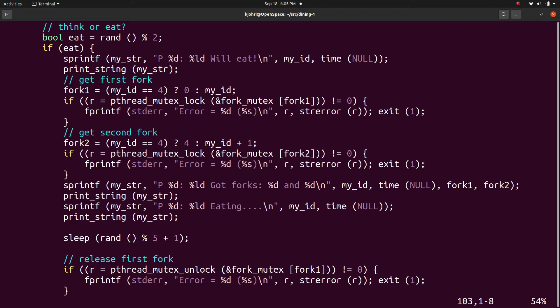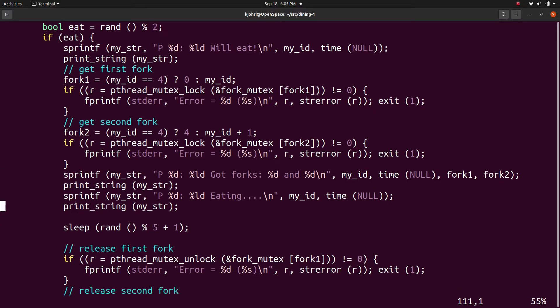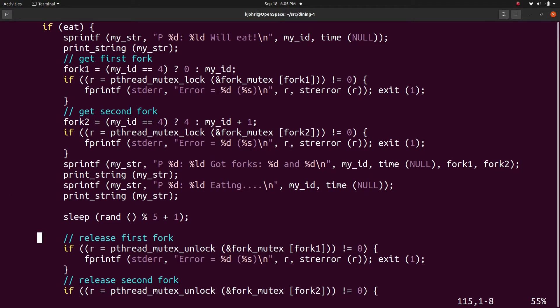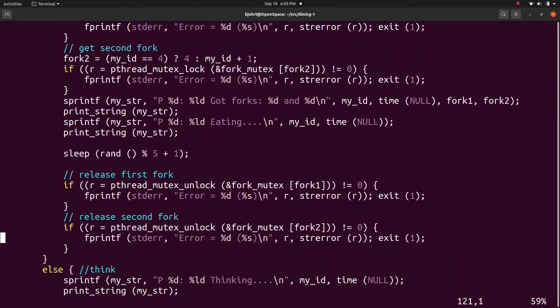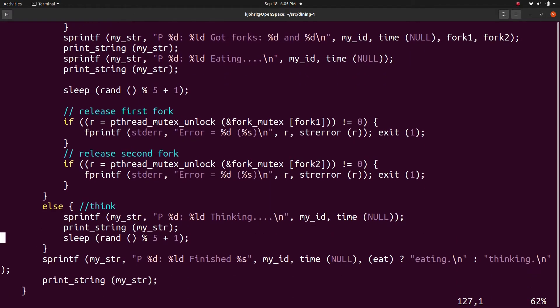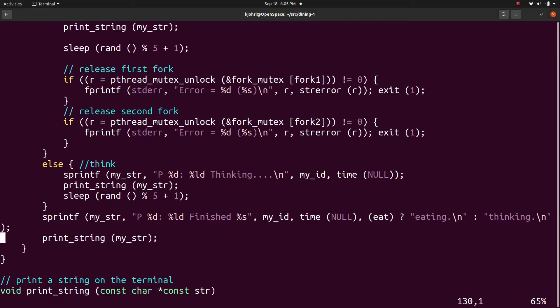The second fork is philosopher id plus 1 for philosophers 0, 1, 2 and 3. For philosopher 4, the second fork id is 4. After acquiring the two forks, the philosopher eats for some time and after eating is over, the philosopher releases the two forks. And instead of eating, if the philosopher decides to think, he or she does that and there are no issues.